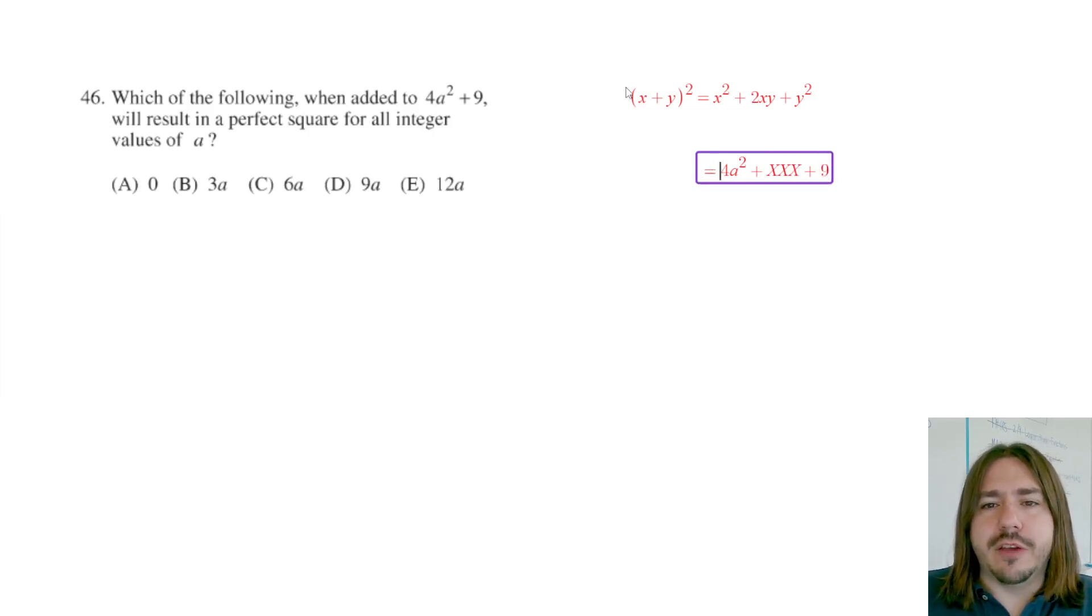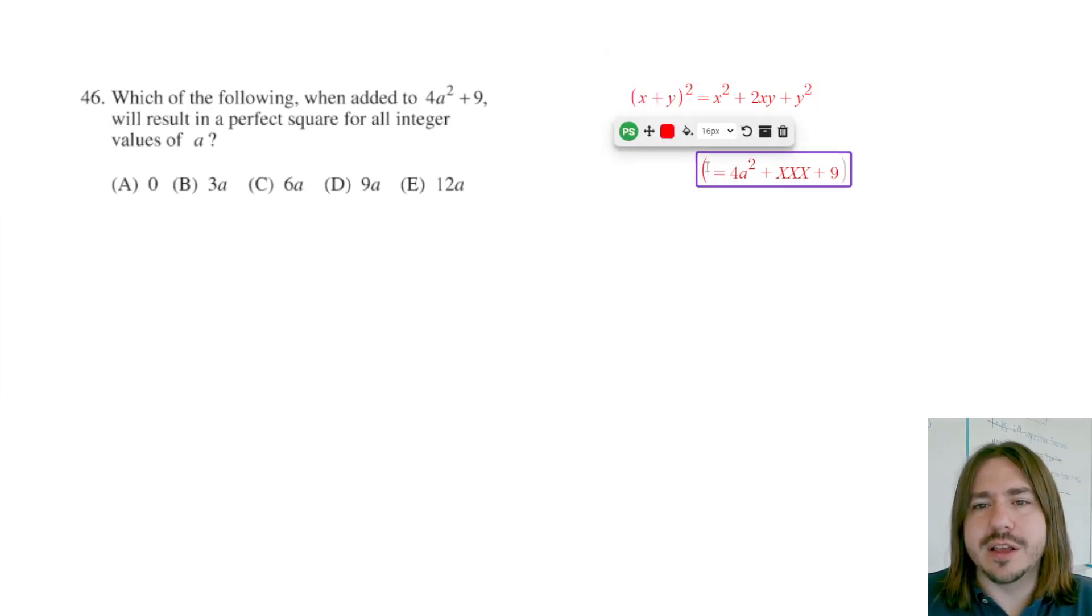So if we look back at this generic squaring that's going on up here and compare it to what we have down here, what we can see is that the way to write this quadratic as a square is going to have to be something like 2a plus 3 squared.